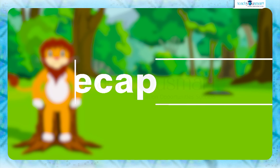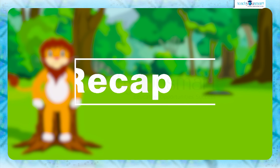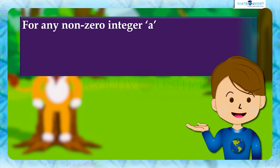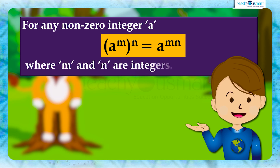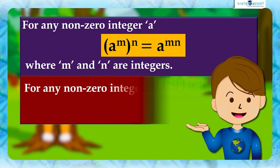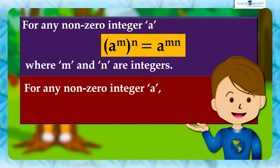Let's recall what we discussed today. For any non-zero integer a: a raised to m, whole raised to n, equals a raised to mn, where m and n are integers. For any non-zero integer a, a raised to 0 equals 1.